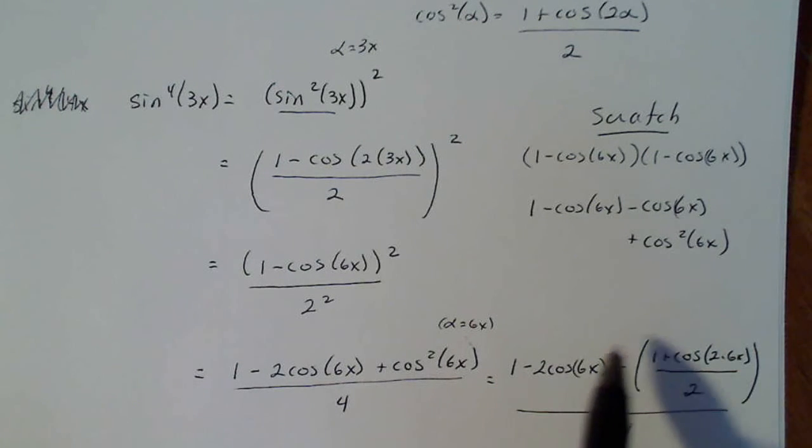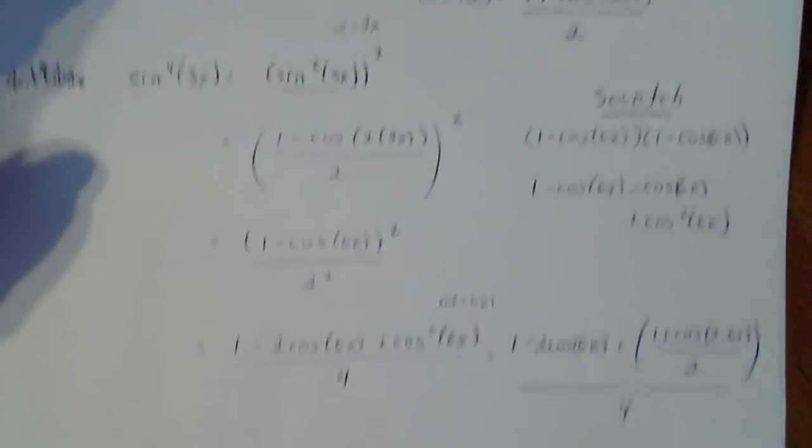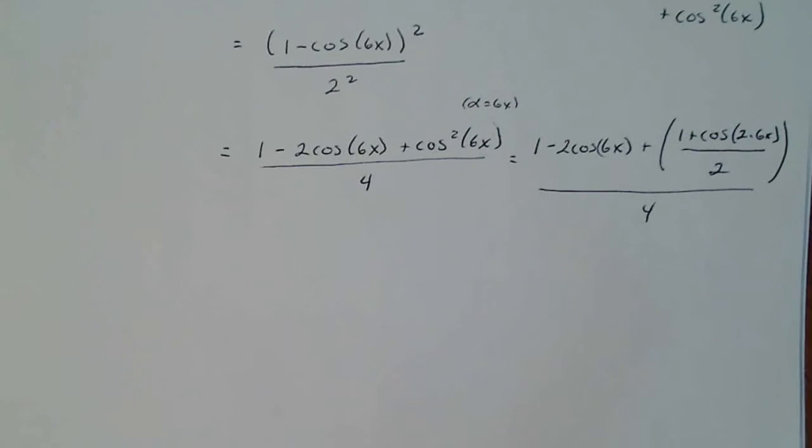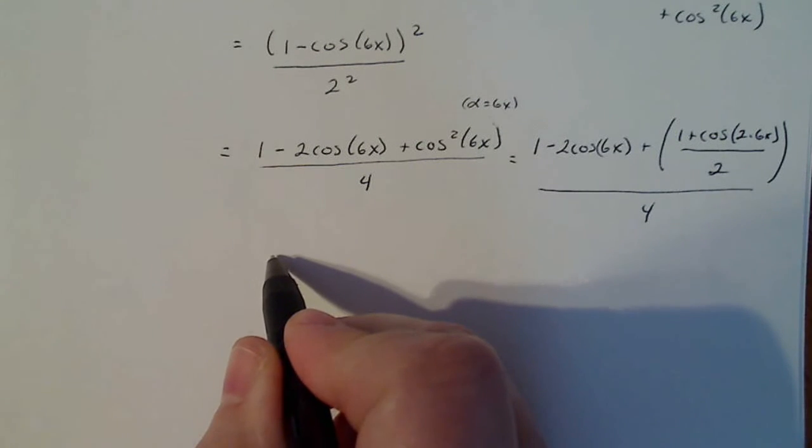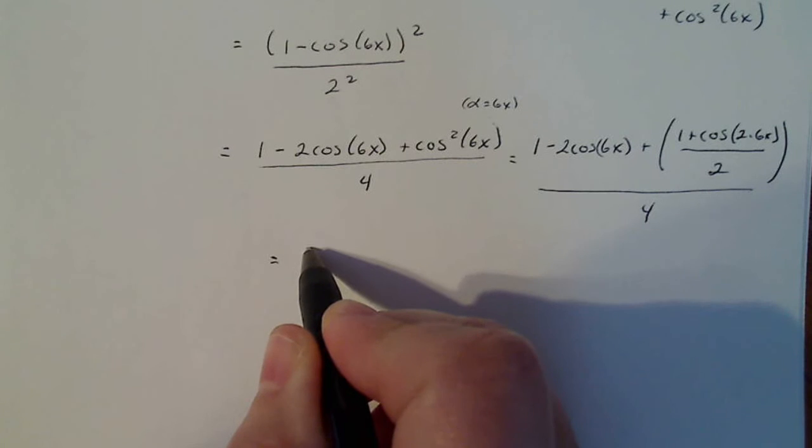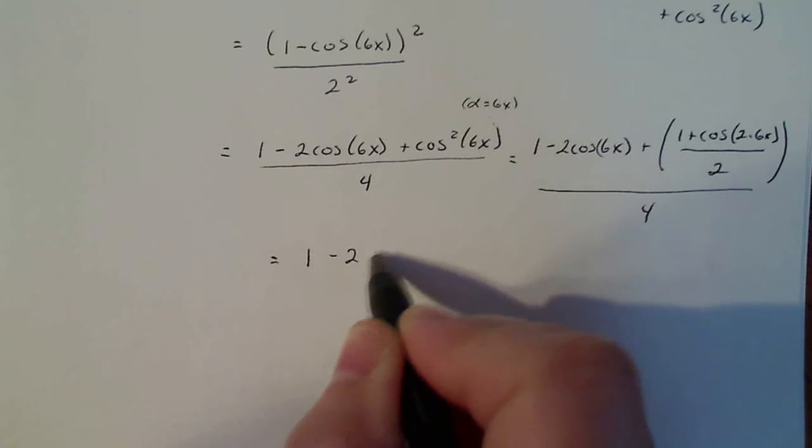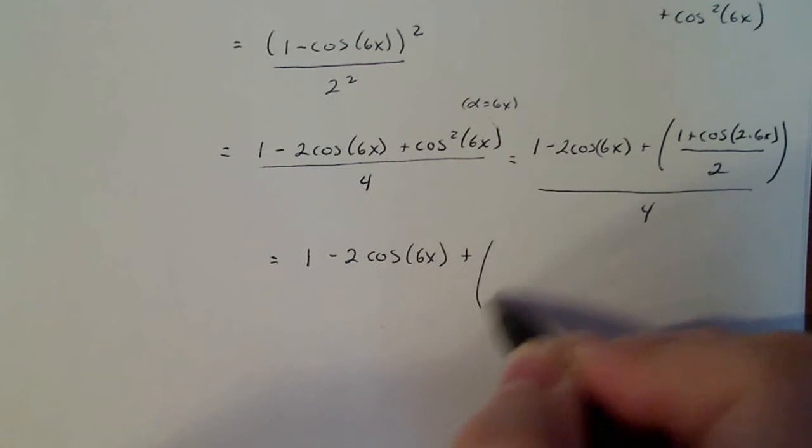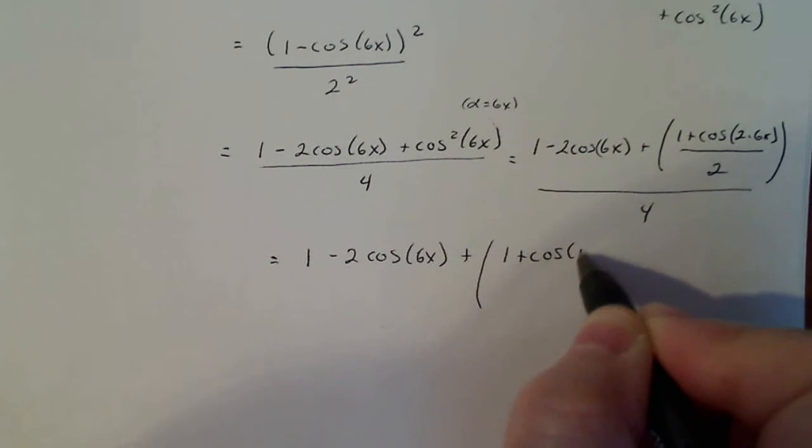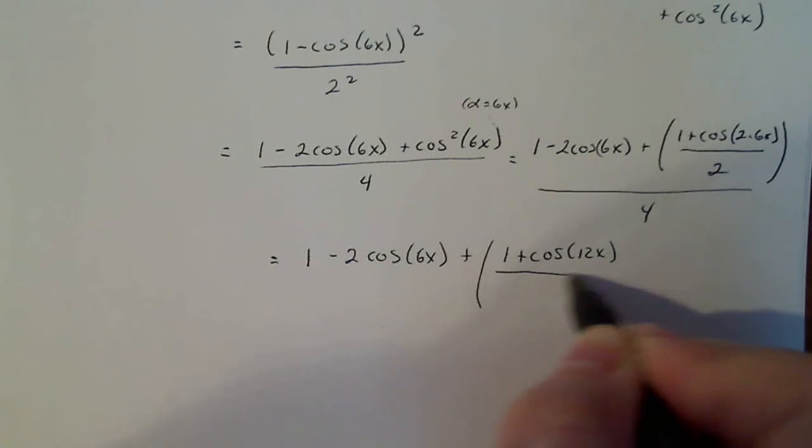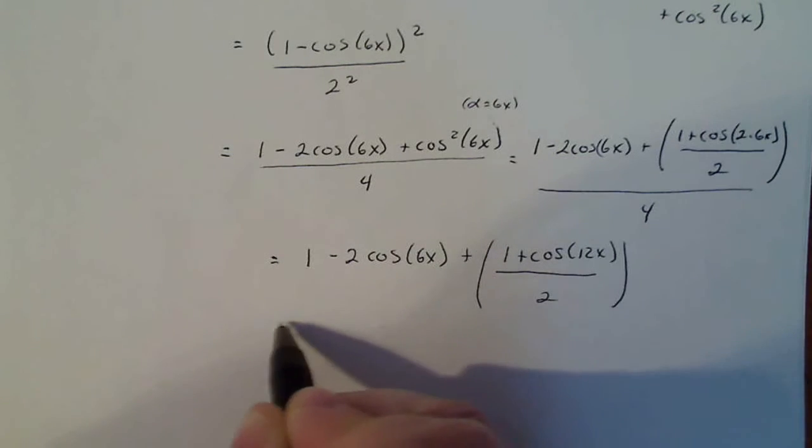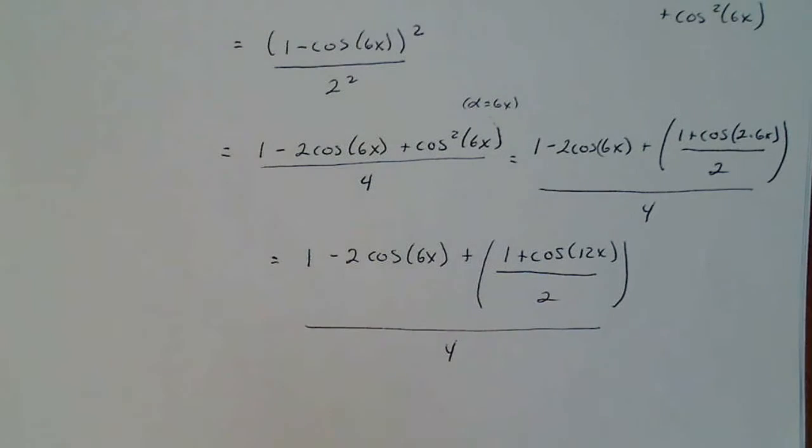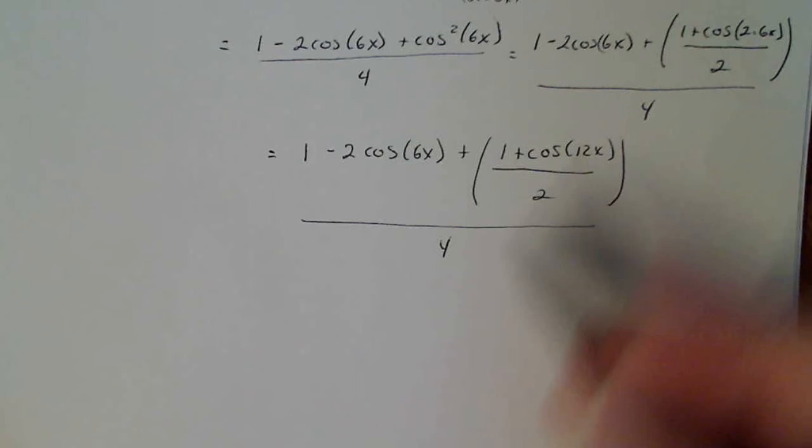But you can see that there's no power anywhere in here other than 1, which is what we want. So now the rest of the problem here is just simplifying this last step. I'm going to write it just a little bit differently: 1 minus 2 cosine 6x plus the quantity 1 plus cosine 12x all over 2, all over 4.